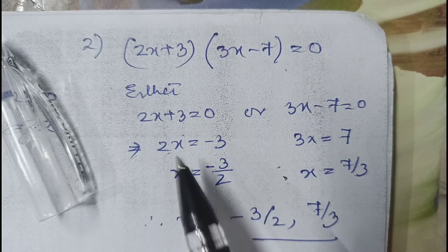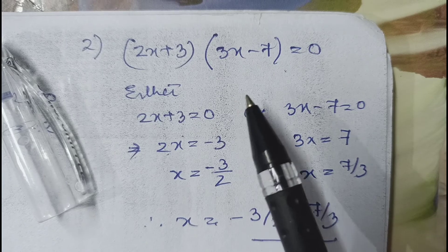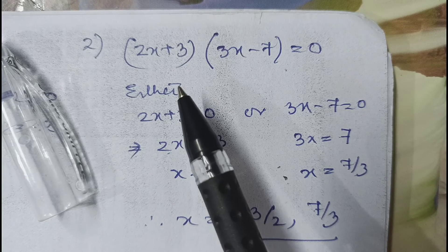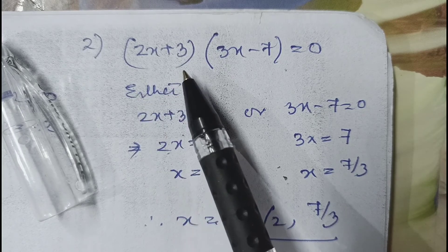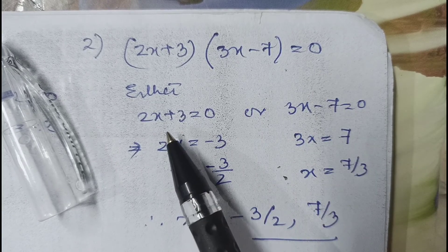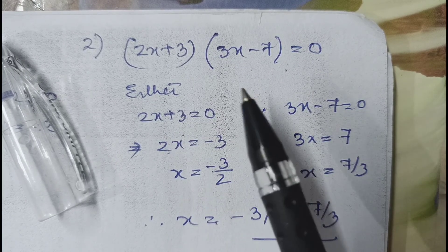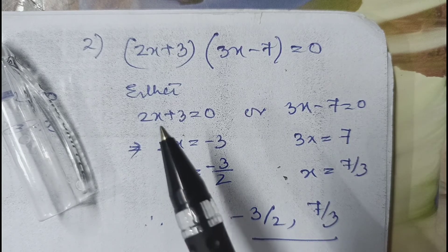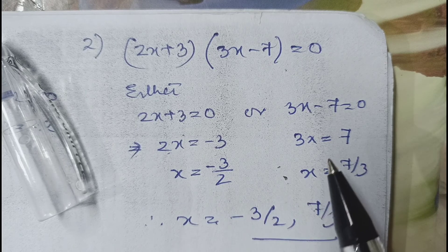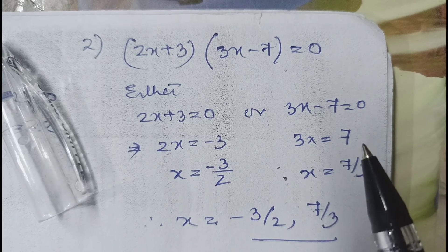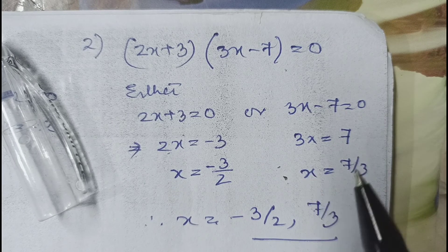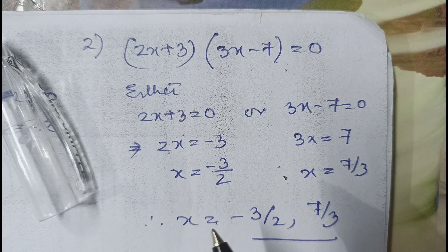Question number 2: (2x+3)(3x-7) = 0. Since it is in product form, either 2x+3 = 0 or 3x-7 = 0. From the first: 2x = -3, so x = -3/2. From the second: 3x = 7, so x = 7/3. Therefore the roots of the given equation are -3/2 and 7/3.